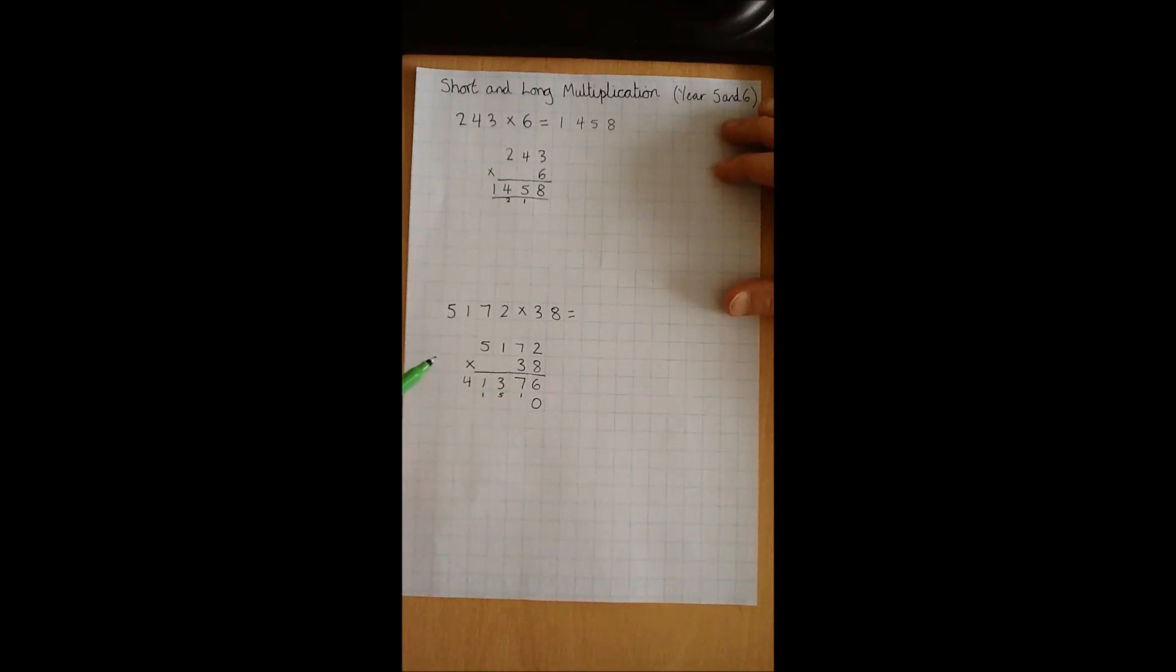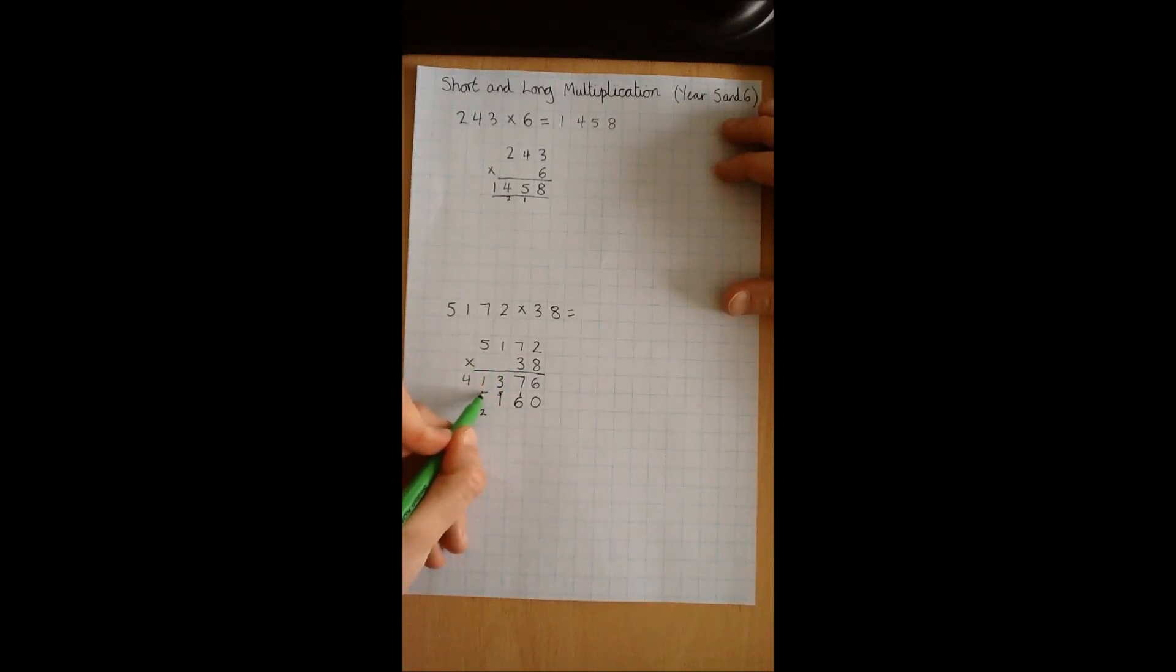And then we can carry on like before. 3 times 2 is 6. 3 times 7 is 21. 3 times 1 is 3, plus the 2 we carried gives us 5. 3 times 5 is 15.